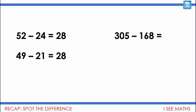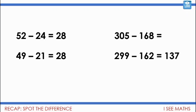Here's another example of constant difference. 305 take away 168 — that's challenging. But if I take away 6 from both numbers I get 299 subtract 162, which has the same answer. 200 take 100 is 100; 9 tens take 6 tens is 3 tens; 9 take 2 is 7. So the answer is 137, and 305 subtract 168 is also 137. Understanding difference can help in so many ways.